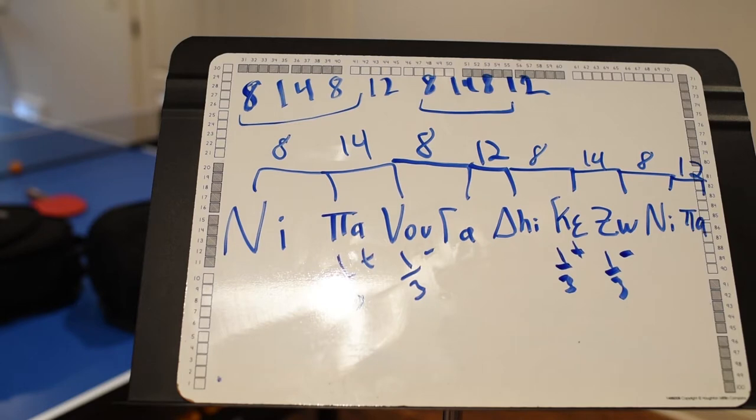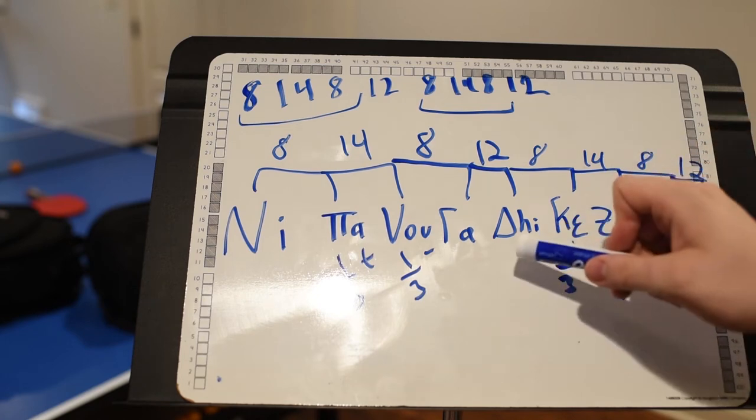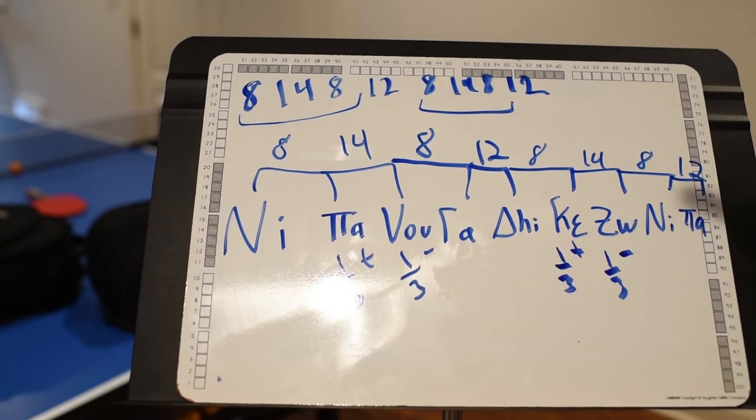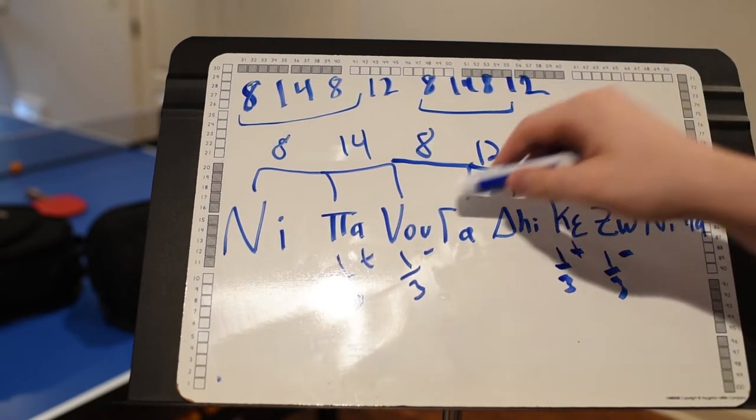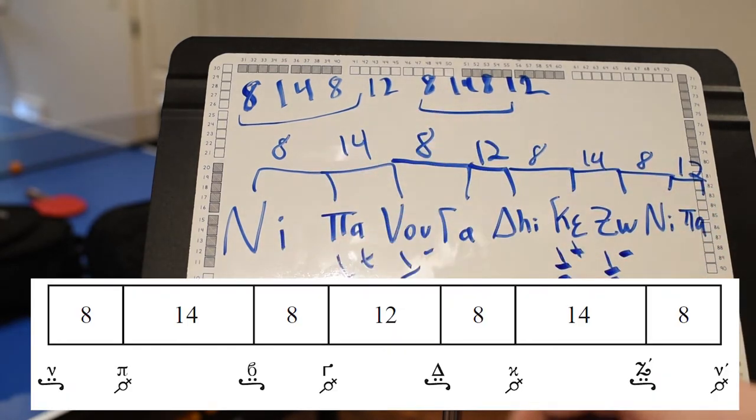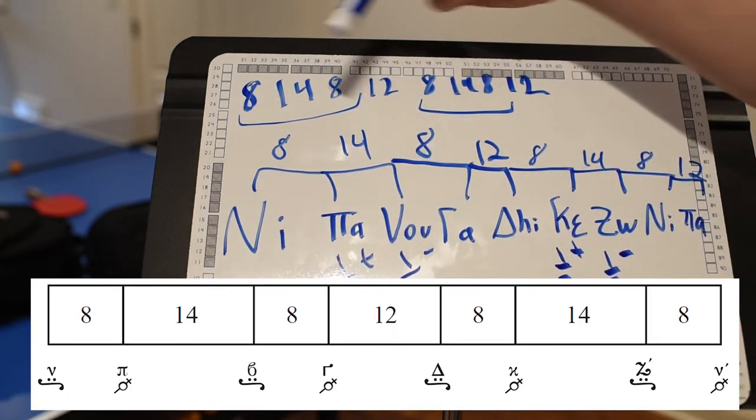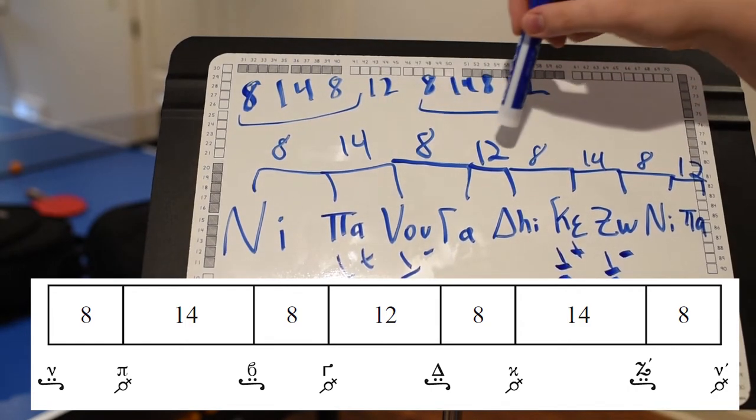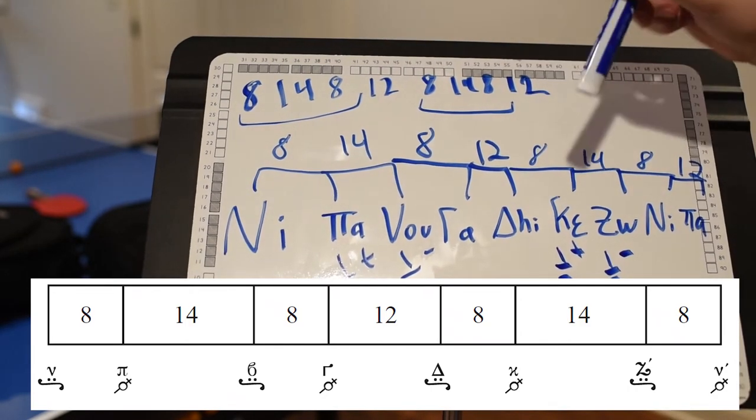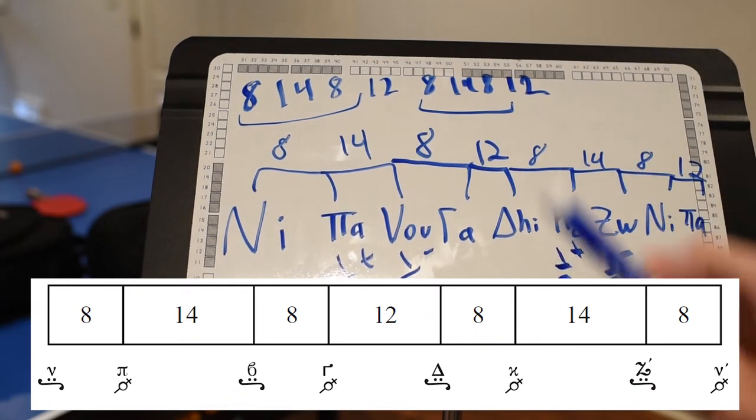So now that we know how the scale works, let's break it up into the two tetrachords. The base note is the V, which is G or Sol, and then you have Keza Ni, and then you have Gha Vo Pa, and then Ni. So the way it's broken down is 8, 14, 8. 8 Marea, 14 Marea, 8 Marea. Then it's combined by whole step, 12 Marea, and then again 8, 14, 8. So let's begin.